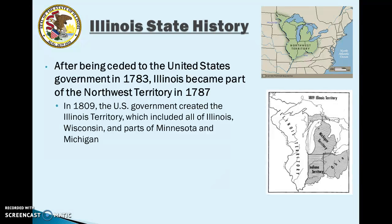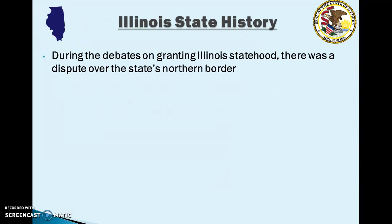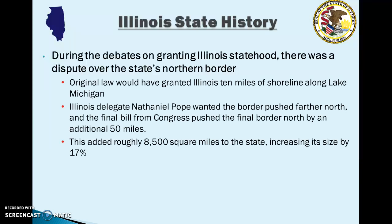During the debates on granting Illinois its statehood, there was a dispute over where the state's northern border should lie. The original law would have granted Illinois only 10 miles of shoreline along Lake Michigan, but a delegate from Illinois named Nathaniel Pope wanted to push the border farther north. He wanted more shoreline along Lake Michigan because he saw it as an opportunity for development of the Illinois territory.